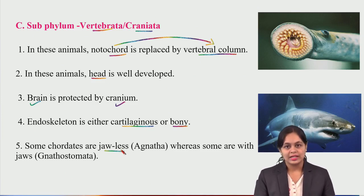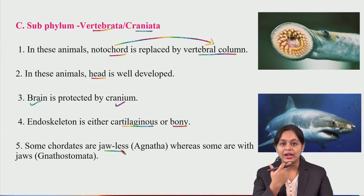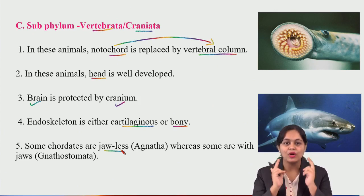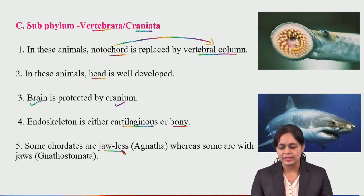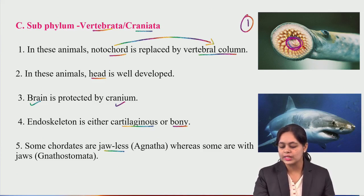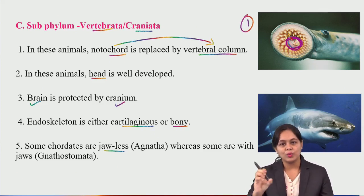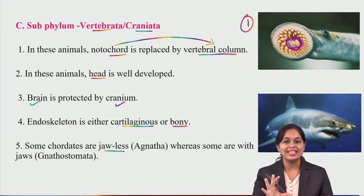Some vertebrates are jawless — called Agnatha. Like a jawless animal that has a circular mouth and feeds by sucking. It opens and sucks repeatedly without jaws, just sucking to eat.